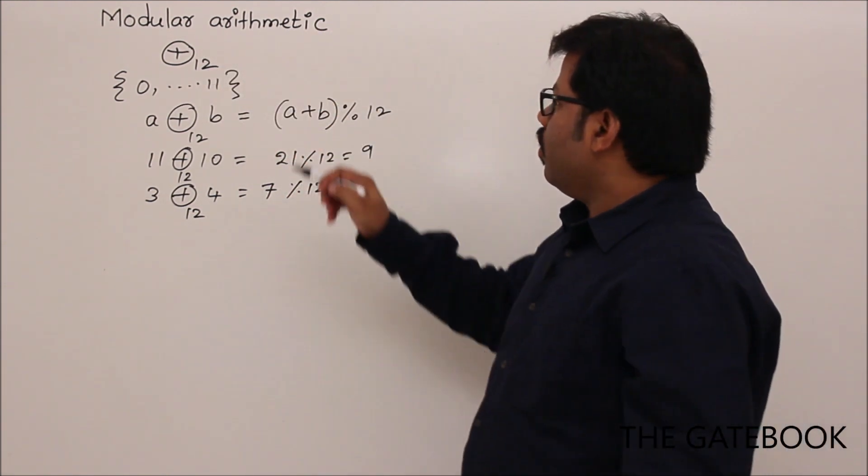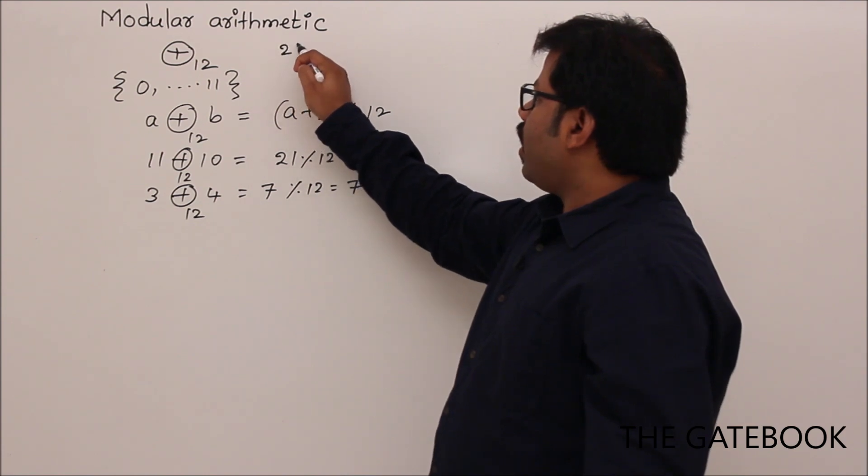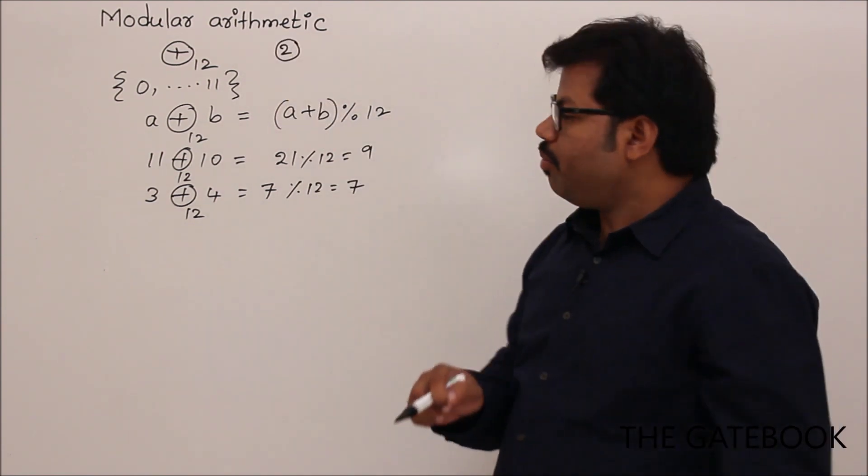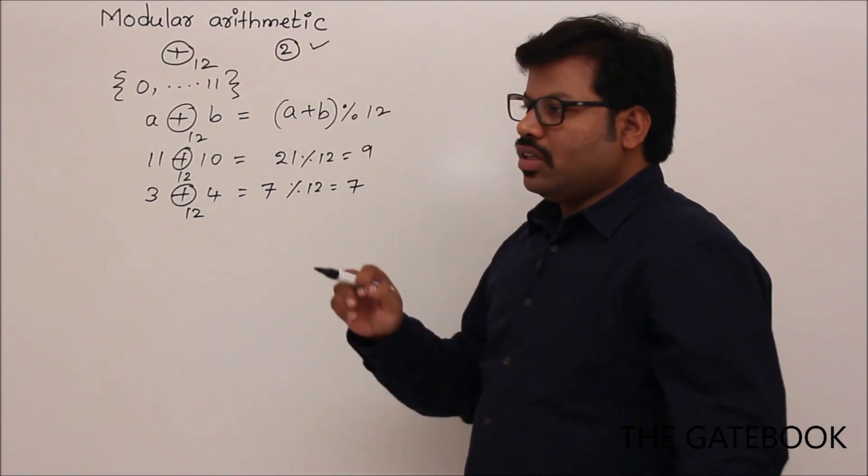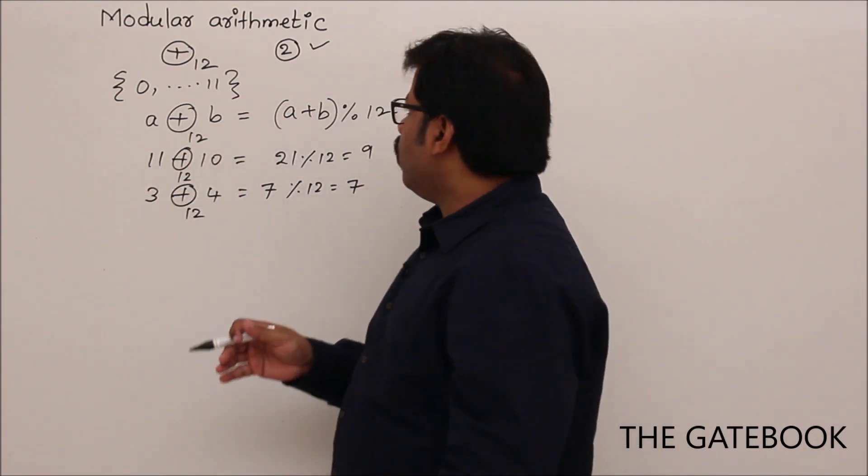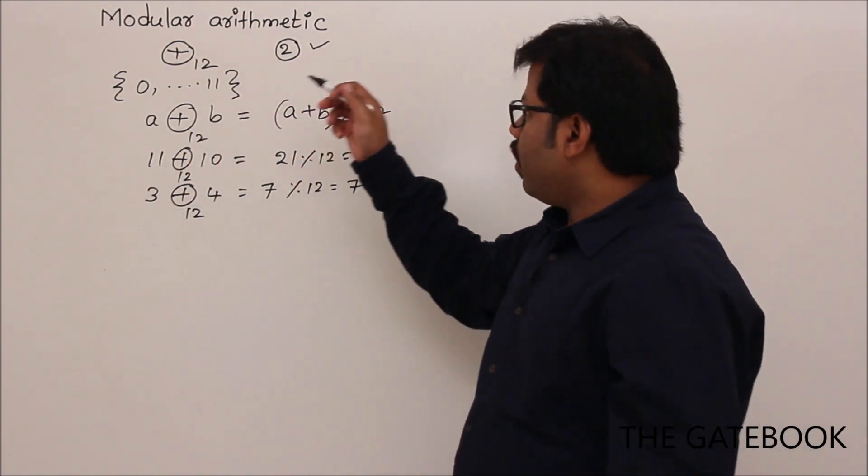Now, let me explain you arithmetic modulo 2, because that is important for us. So in our error detecting correcting codes, we are going to use arithmetic modulo 2.